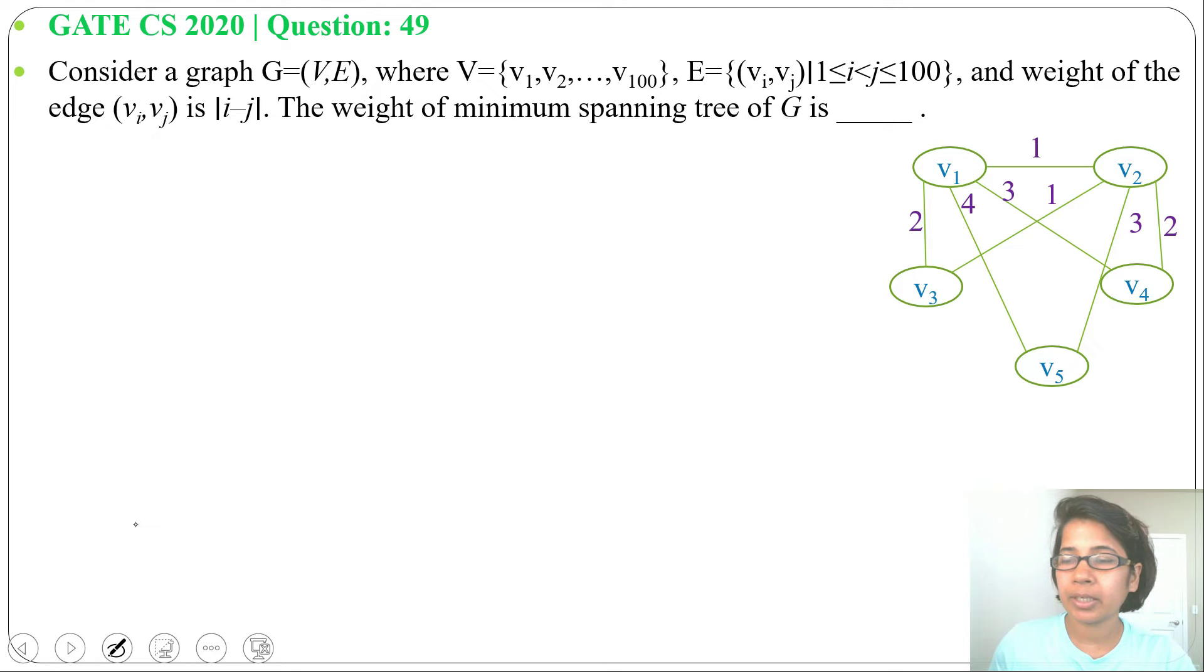Next we will do for vertex 3. Vertex 3 to vertex 1 and vertex 2 is already there. v3 to v4 weight will be 1 (|3 - 4| = 1). Then v3 to v5 will be 2 (|3 - 5| = 2). Next v4 to v5 weight will be 1 (|4 - 5| = 1).